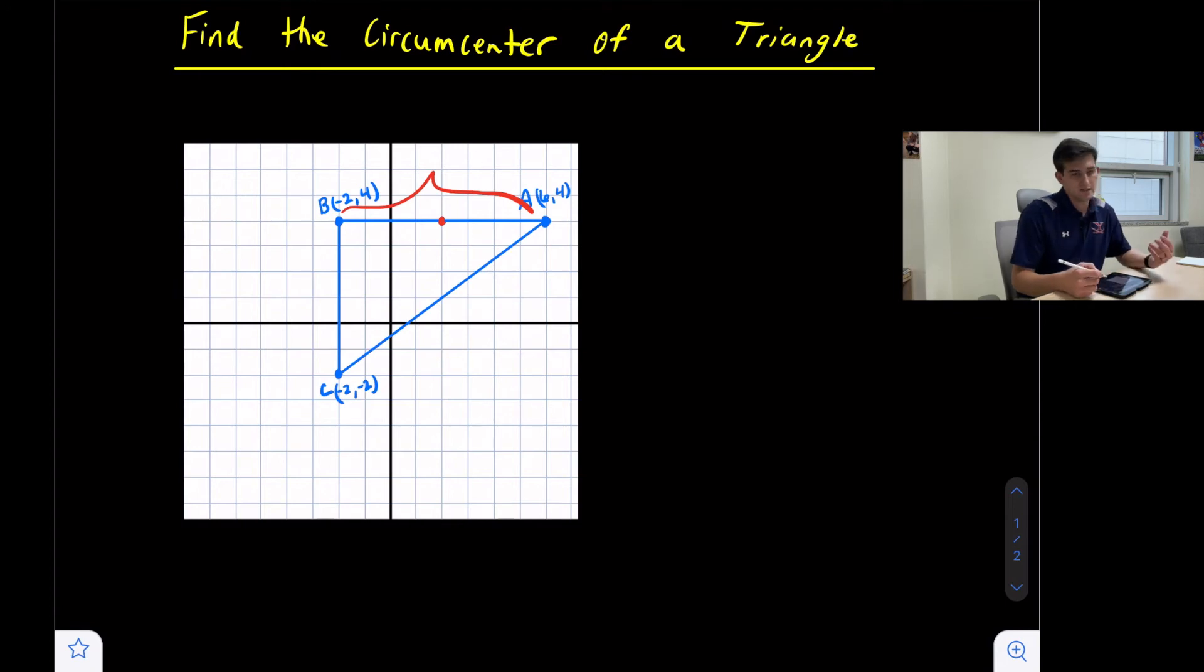Since that is a horizontal segment, its perpendicular would be a vertical line. So I can draw a vertical line right through there, and that would be the perpendicular bisector for side AB.